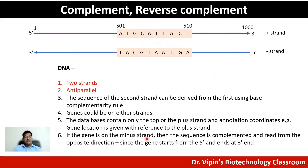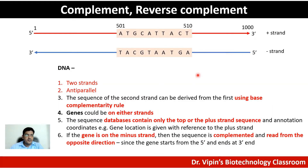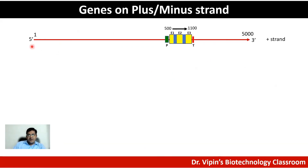If the gene is on the minus strand, the sequence is complemented and read from the opposite direction, since the gene starts from the five prime end and ends at the three prime end. Let's now look at the idea of reverse complement in the context of a gene. Here I show the plus strand with a gene at coordinates 500 to 1100, with two introns and three exons marked as E1, E2, and E3. Upstream of the five prime end is the promoter, and at the three prime end is the termination sequence.